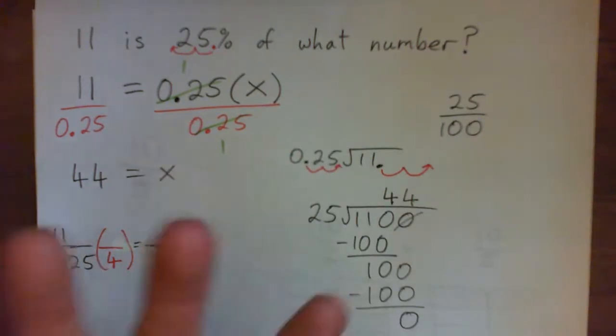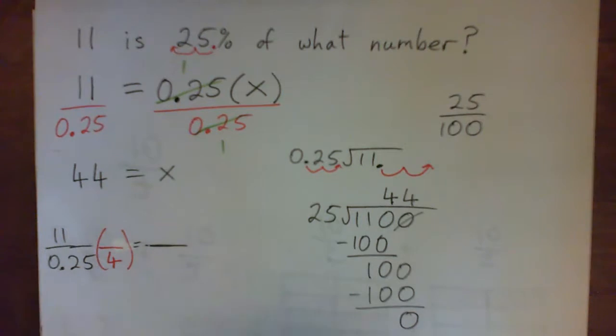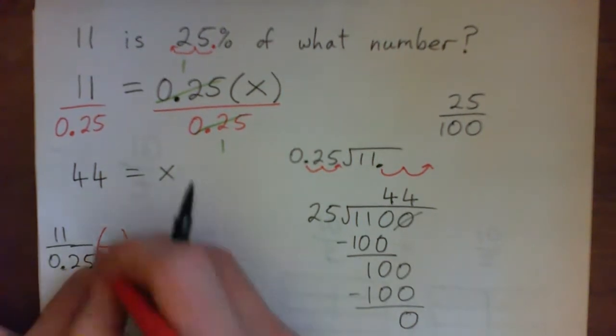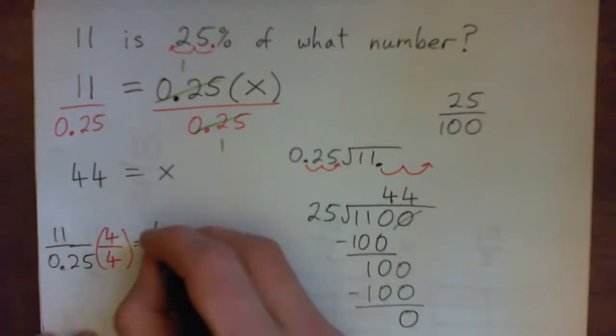There's four quarters in a dollar. So 0.25 times 4 is 1. And I could multiply the top by 4 also. 11 times 4 is 44.